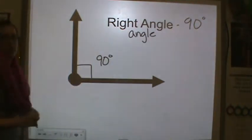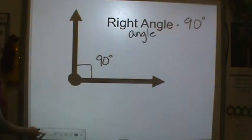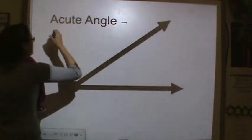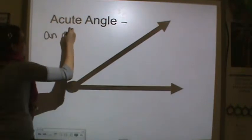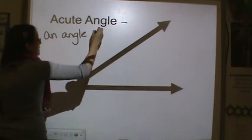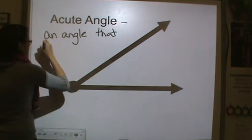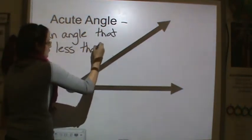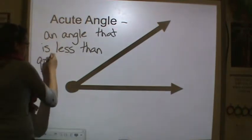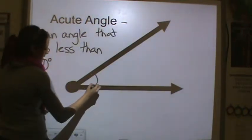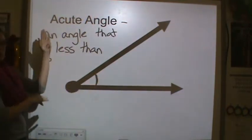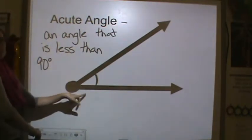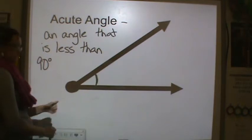An acute angle is an angle that is less than 90 degrees. So this here is narrower — like, if this were a 90-degree angle, it's narrower than that — so it's an acute angle.